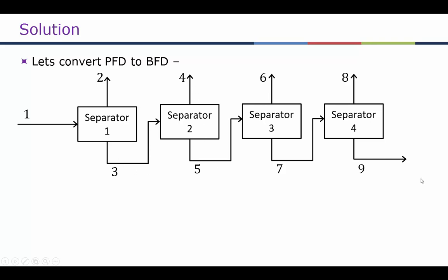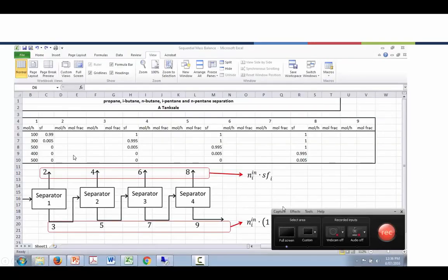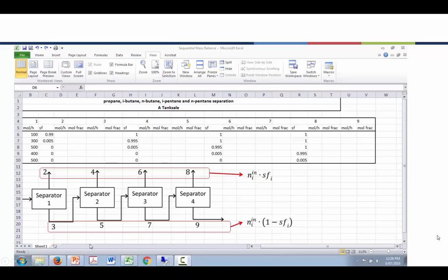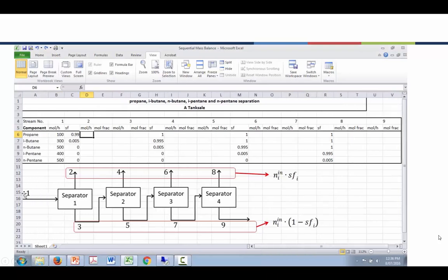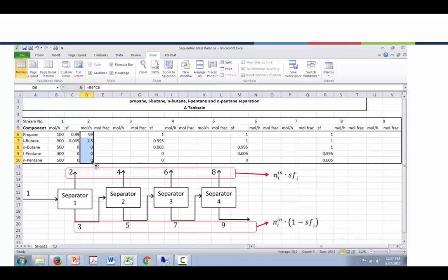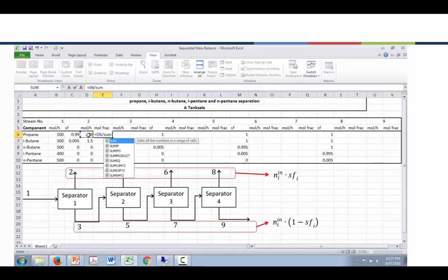We give a stream number to each stream and a separator number to each separator, then set up an Excel flowsheet with labeled titles and all given flow rates entered. For each stream, we have mole flow rate, split ratio, and mole fractions. For even-numbered streams, moles out equals moles in times the split fraction; for odd streams, moles out equals moles in times one minus the split fraction.